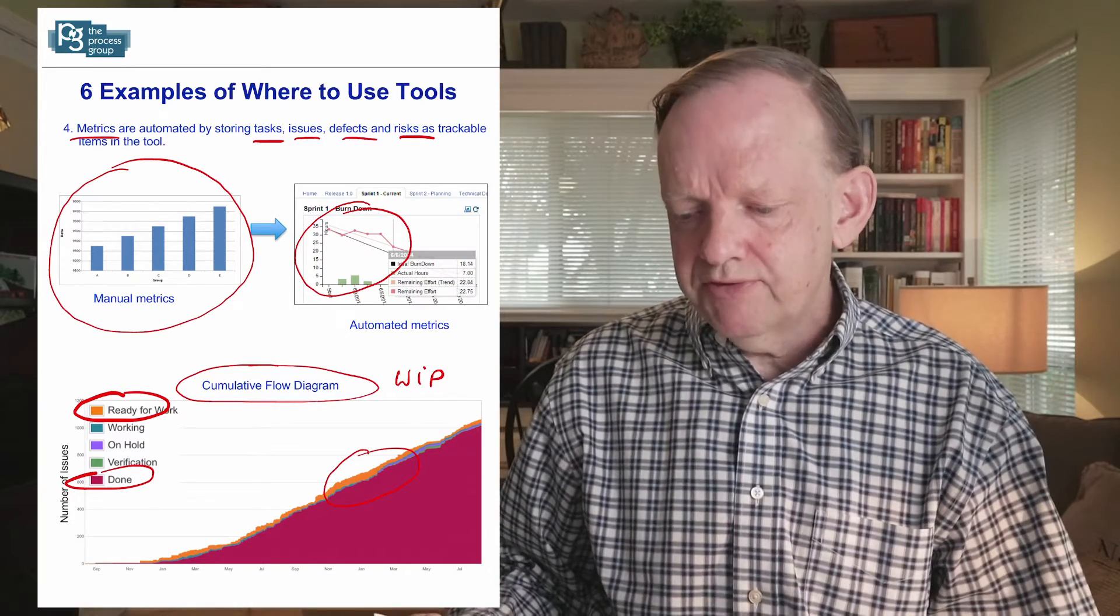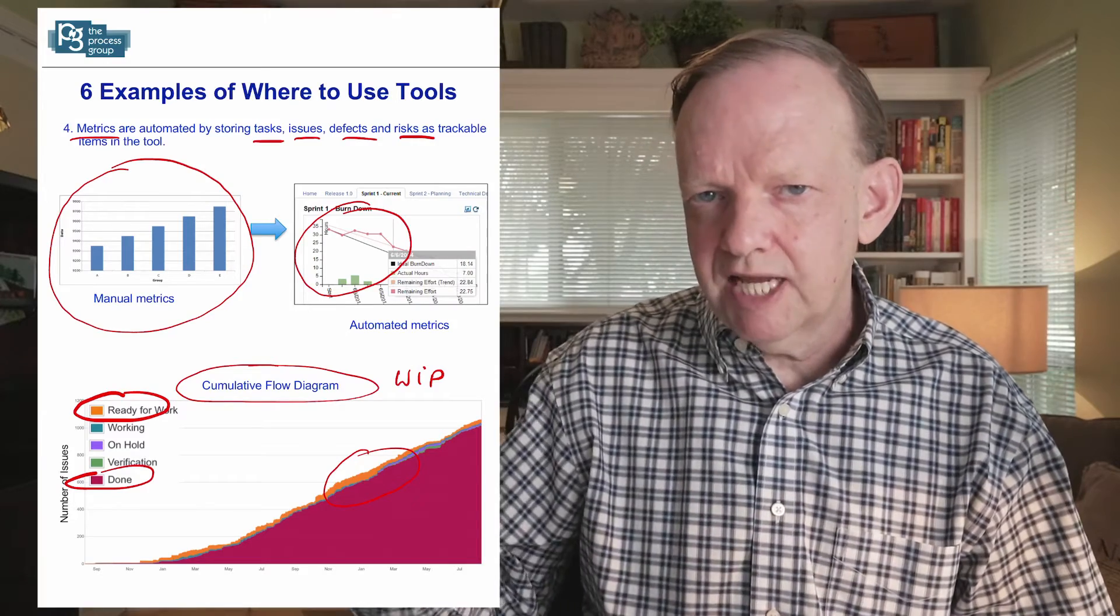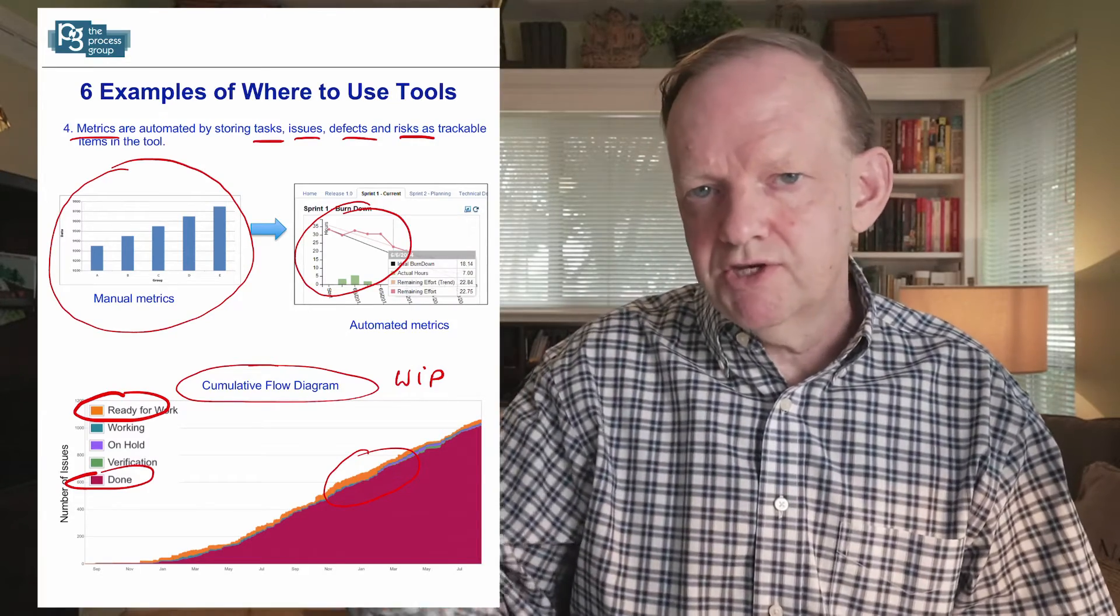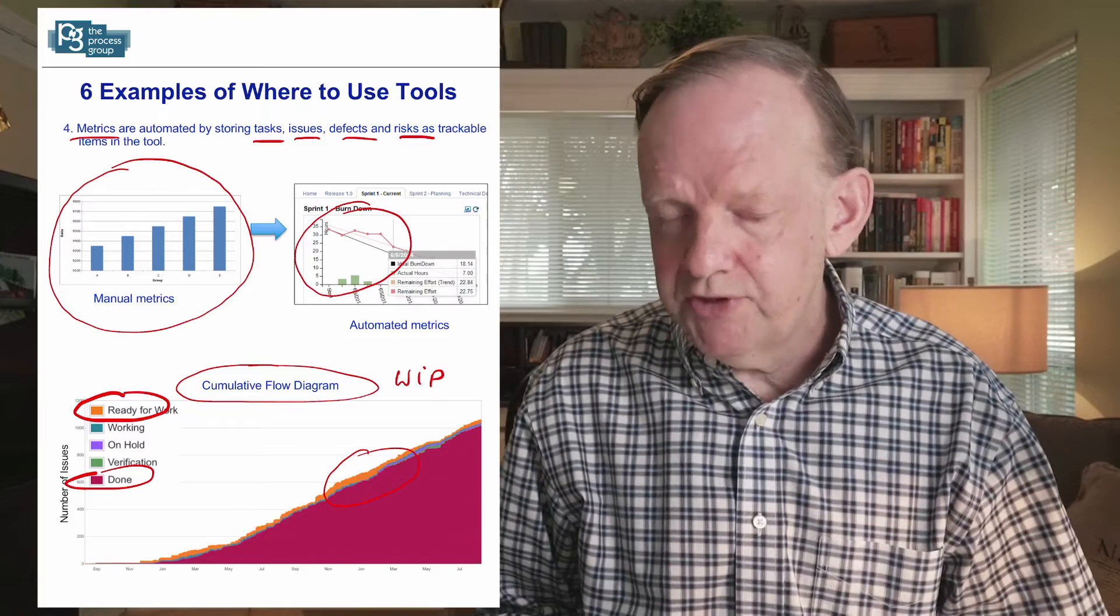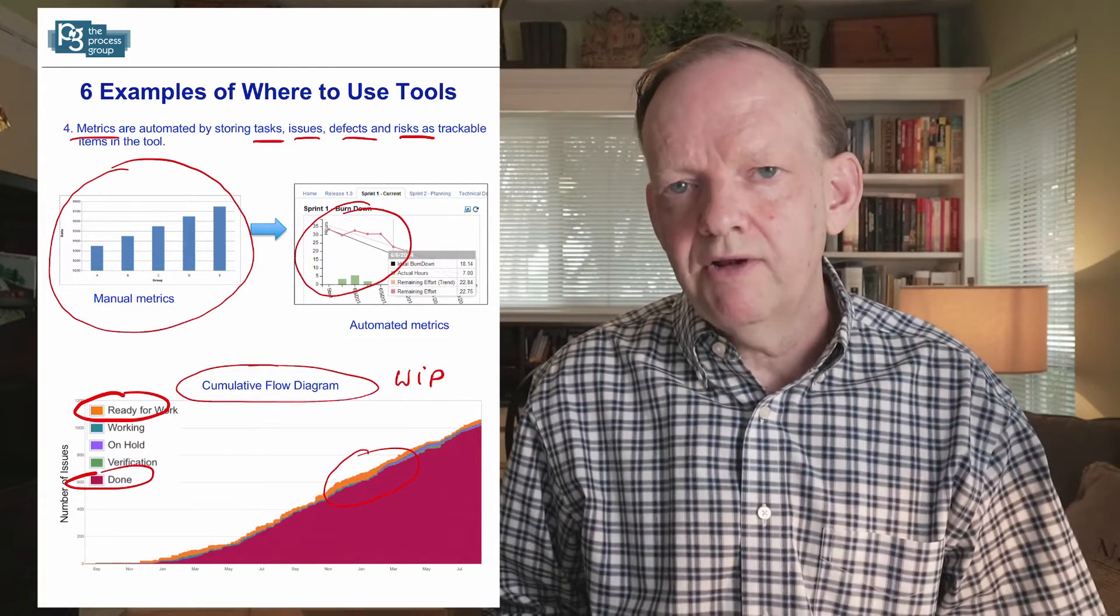So again, the more you can put in things as trackable items in a list and then maybe change the label of the list like risks, issues, and details, then you can really do some very clever metrics and prediction by looking at the tool data.